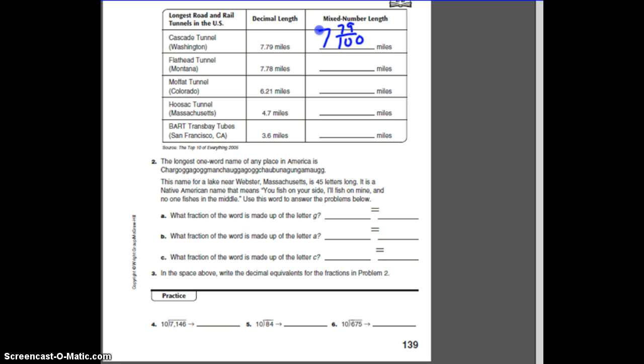Next one, 7 is your whole number, 78 hundredths, so you're going to write it now, 78 over 100.